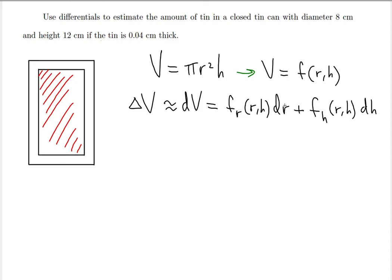There is a partial derivative with respect to r and with respect to h, and also a change in the radius and a change in the height. The change in the radius, dr, is the thickness on the left and right sides. The radius takes care of both sides at the same time, so we just write dr. However, dh is more complex because we're talking about changes on the top and the bottom as well. Each side contributes dh/2, so if you add them together you get the overall dh. The radius takes care of that automatically, so you don't need two dr terms.